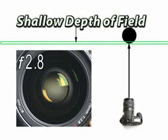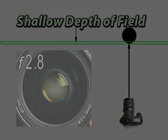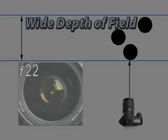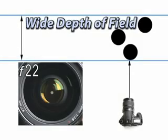And the rule is this: the wider the aperture, the thinner your depth of field — the thinner this wall of focus. The smaller your aperture, the thicker the wall.